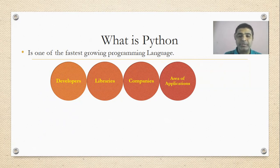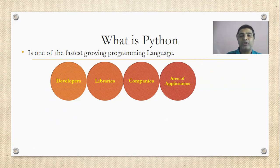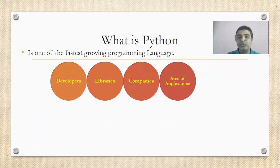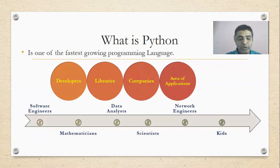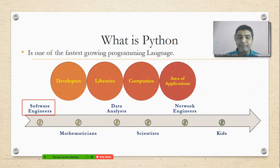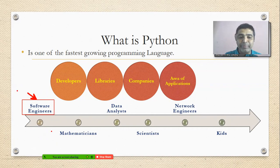Now, who are the people who use Python? There are many programming languages like C, C++, Java, and C#. C and C++ are used by a particular segment of people, Java is used by a particular segment, C# is again used by a particular segment. But when it comes to Python, it is used by many segments of people. Obviously Python is used by software engineers, no doubt about that, but it is not restricted only to software engineers.